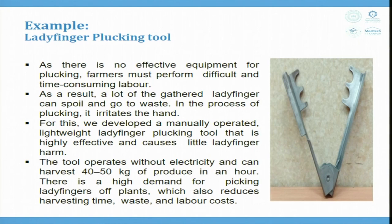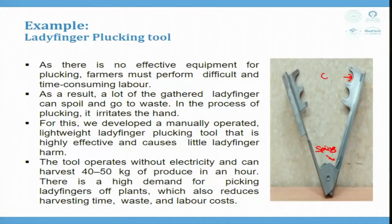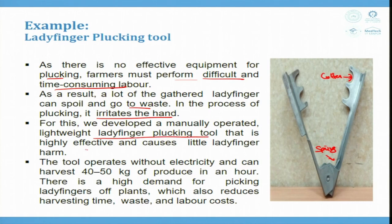A fruit plucking machine for lady finger: a spring-loaded plucker with an attached cutter was developed. Without effective equipment, farmers perform difficult and time-consuming labor, causing gathered lady finger to spoil and waste. Lady finger pulp is also sticky and irritates the hand. The manually operated, lightweight lady finger plucking tool is highly effective, causes little harm to the crop, operates without electricity, and can harvest 40–50 kg of produce per hour, reducing harvesting time, waste, and labor cost.